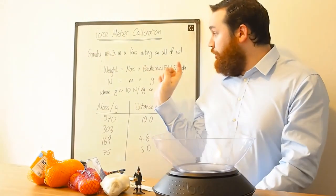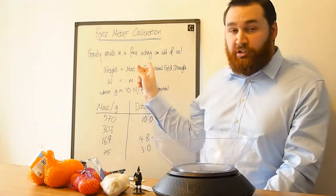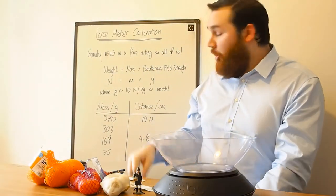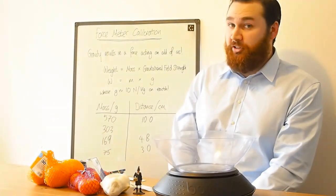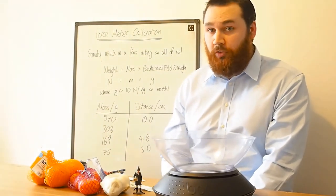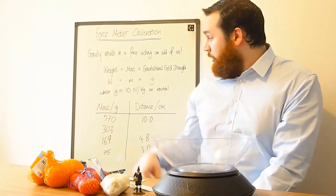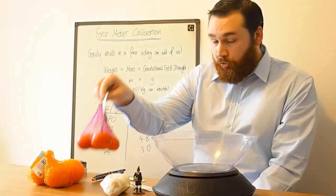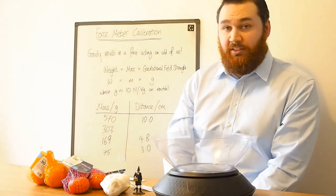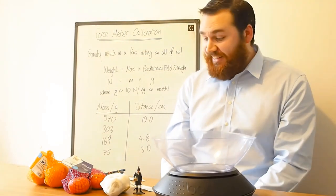So what we're going to do is we're going to use this equation where weight is equal to mass times the gravitational field strength. That just means how much gravity is pushing on us. And on earth, we can approximate gravity, or g, to be 10 newtons per kilogram. If you remember, we measure force in newtons. So if we know the mass of an object, such as say these tangerines, then we can calculate the weight of it. And that's actually a force. This is quite nifty stuff.